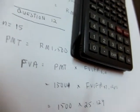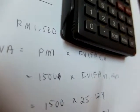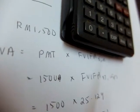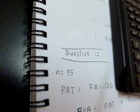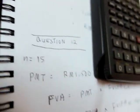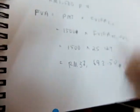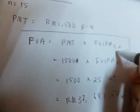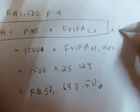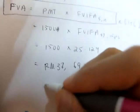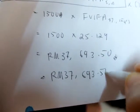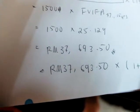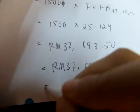And the question asks you to recalculate if the cash flow is at the beginning of the year. So what you do is basically take this result and multiply by 1 plus i. So it's 37,693.50 multiplied by 1 plus 0.07, or 7%.